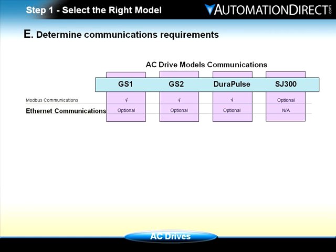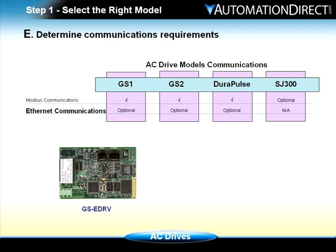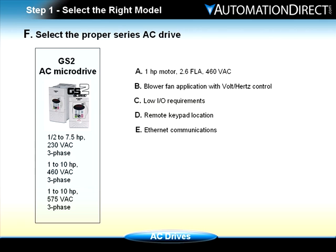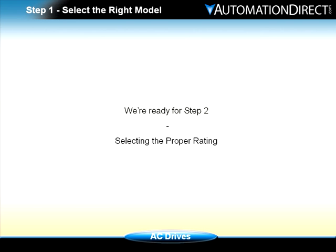The GS1, GS2, and DuraPulse AC drives also have the capability to communicate through an optional Ethernet interface by utilizing the GSE drive interface board. This board receives the Ethernet connection from the master and sends out an RS-485 serial Modbus communication to the AC drive. We'll be using Ethernet to communicate with the PLC. Based on all the facts, we have determined that the most cost-effective AC drive series that fits our application is the GS2 AC micro drive. We're now ready for Step 2, selecting the proper rating.